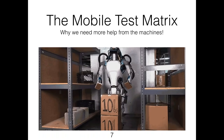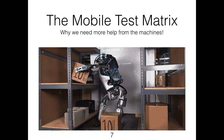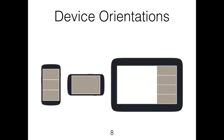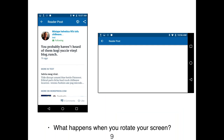So, the mobile test matrix — we need more help from the machines. You have device orientations. The majority of people only test in portrait orientation, which makes sense, but if your application supports both orientations, it's important that you verify that usability and design works in both landscape and portrait. What happens when you rotate your screen? In one case, this application's screen would blink. Had it been tested before release, you would potentially have caught it before it was pushed to production.